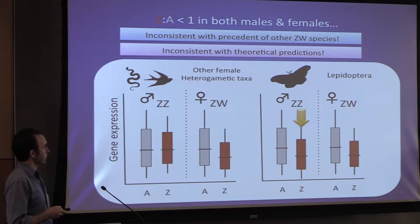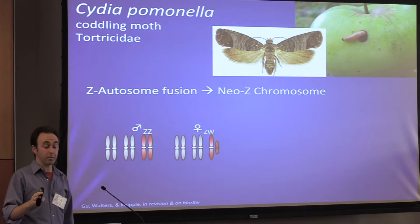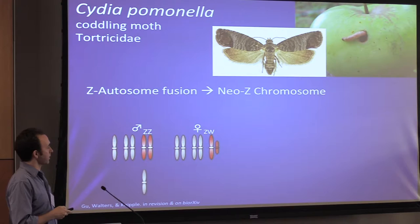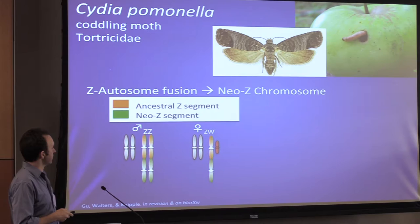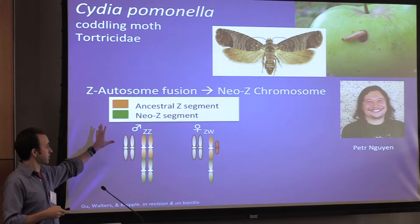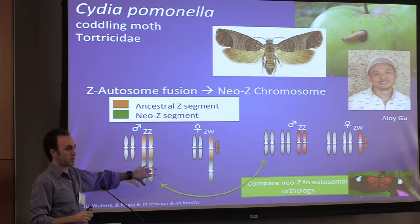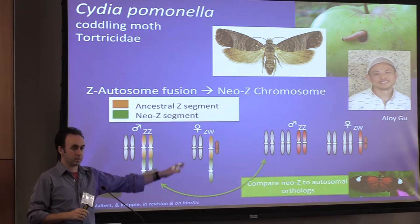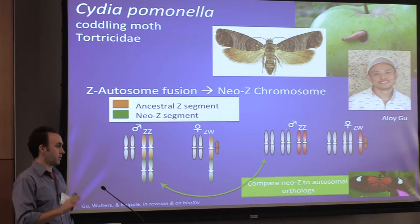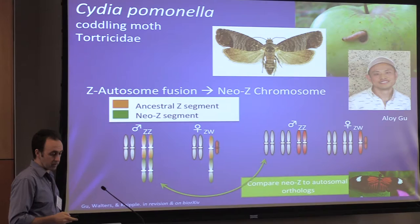One approach for investigating this is to work in systems with Neo-Z chromosomes. In Cydia pomonella — the apple coddling moth, literally the worm in your apple — there was a Z-to-autosome fusion where an autosome was translocated and linked to the Z chromosome, giving an ancestral Z segment and a Neo-Z segment. A postdoc in my lab, Aloy, recognized that you can use these Neo-Z genes and compare their expression to autosomal orthologs in another species to examine gene expression patterns. The results are consistent with the idea that males are actively down-regulating their Z chromosome — please talk to Aloy or attend his talk for details.